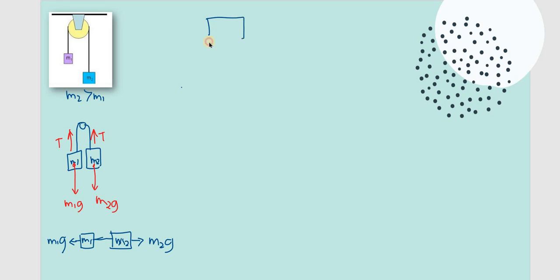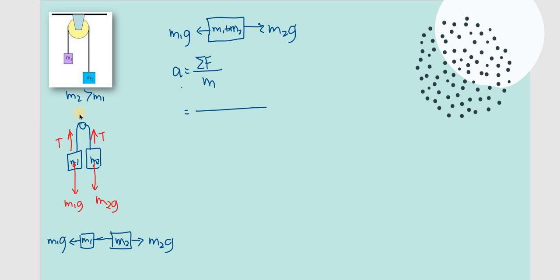We have the combined mass M1 plus M2, with forces M2G and M1G. We can now solve for acceleration. Acceleration equals the summation of forces over mass. Since M2 is greater than M1, M2G is greater than M1G, so: A = (M2G − M1G) / (M1 + M2). That's how you solve for acceleration.